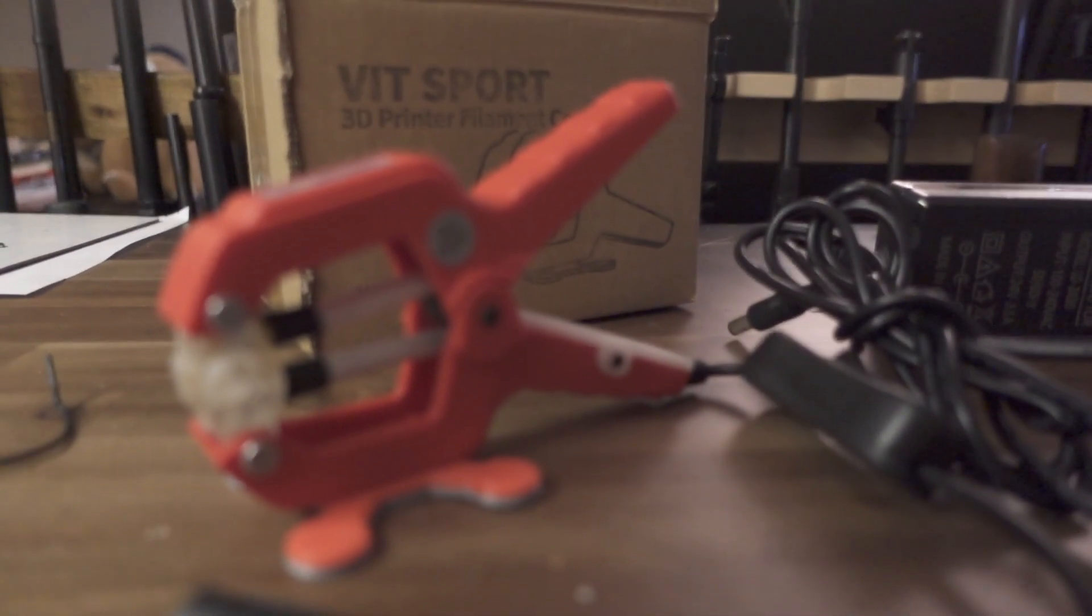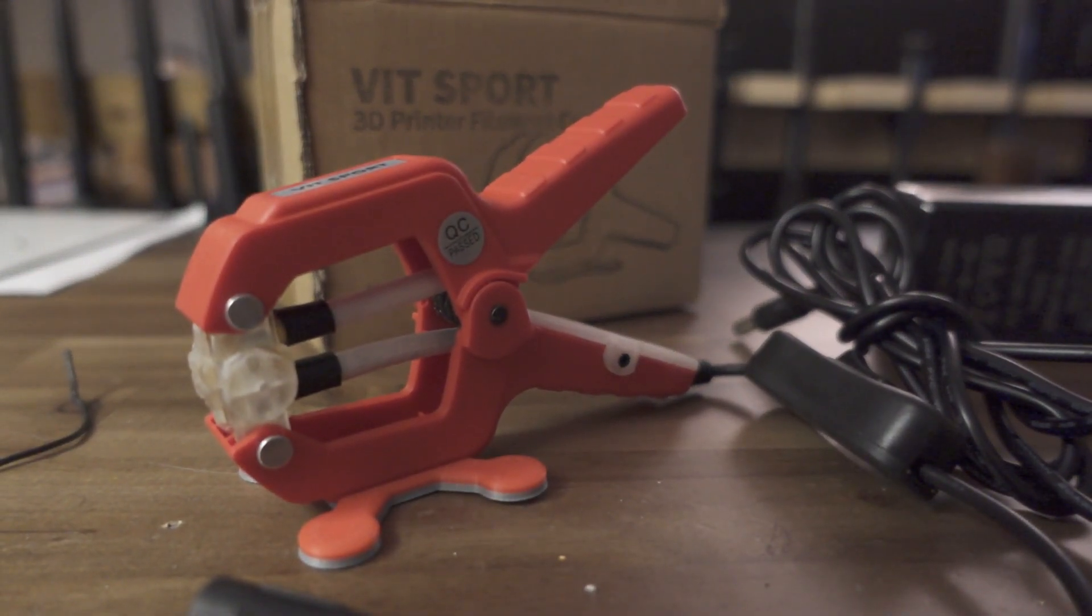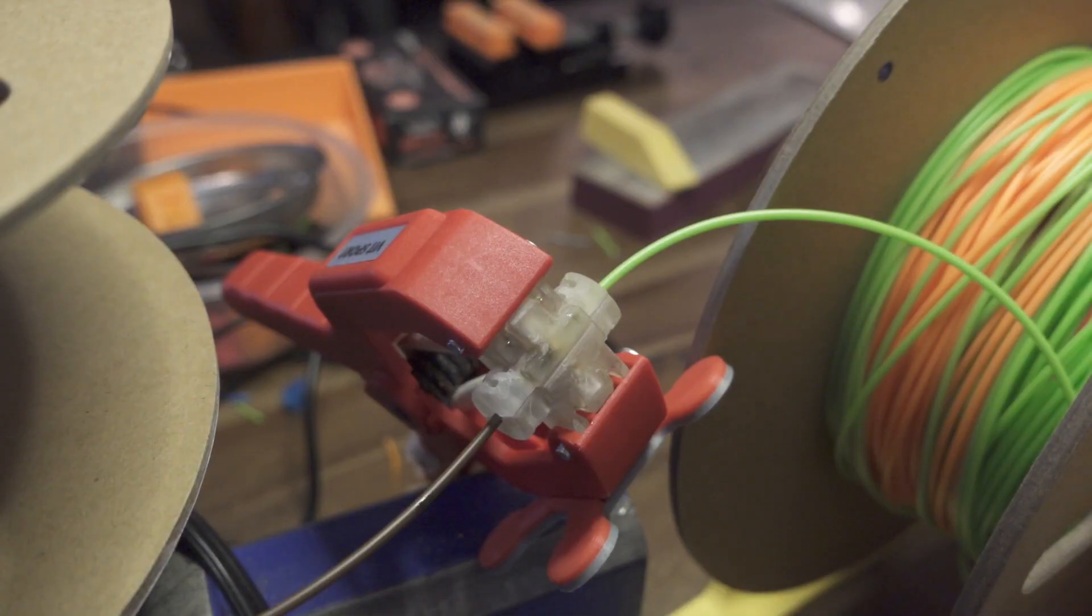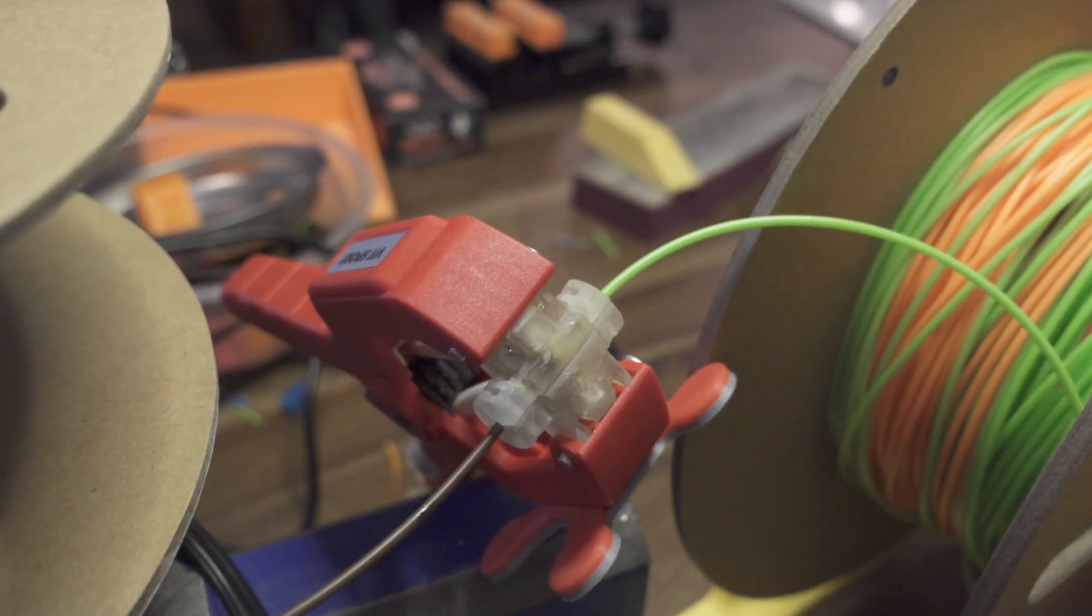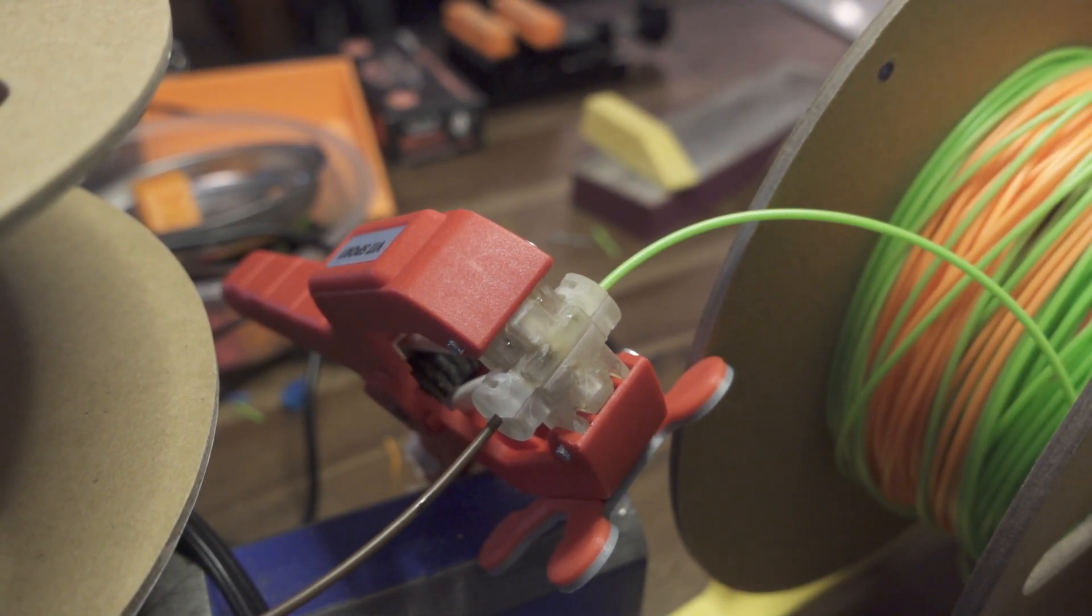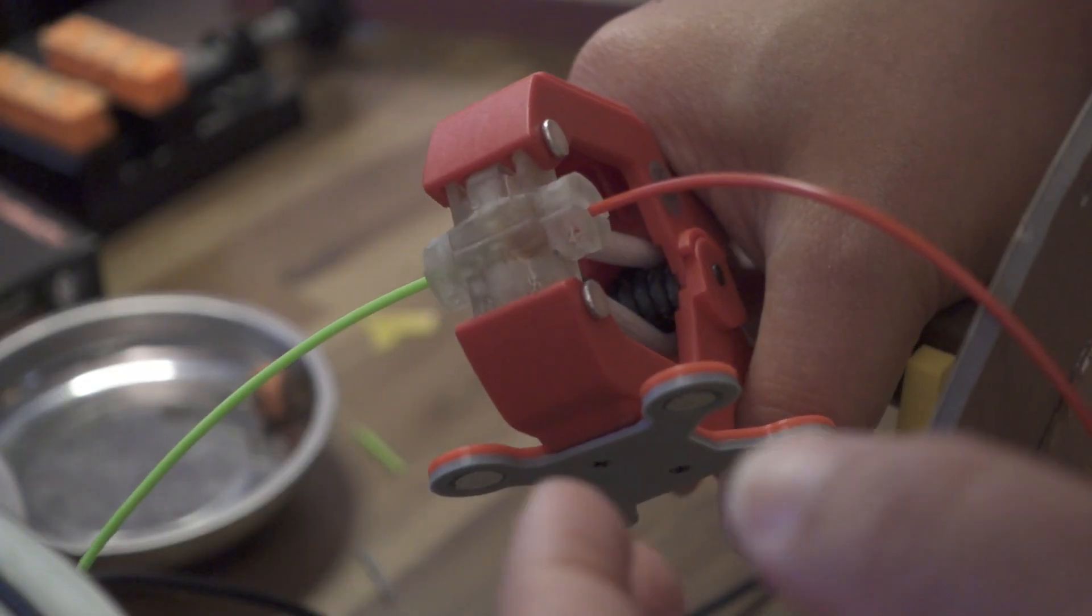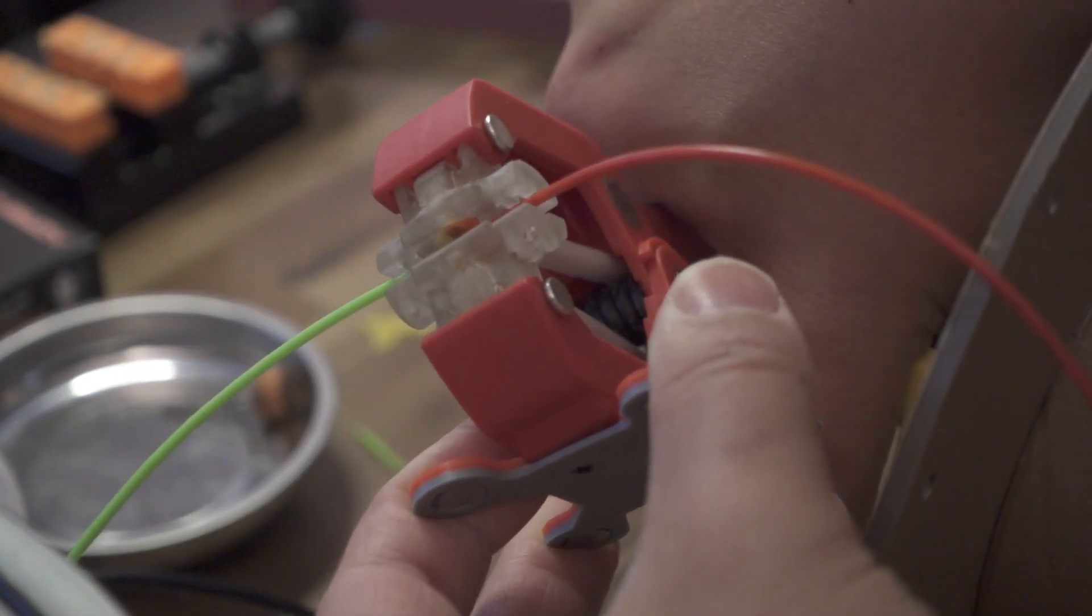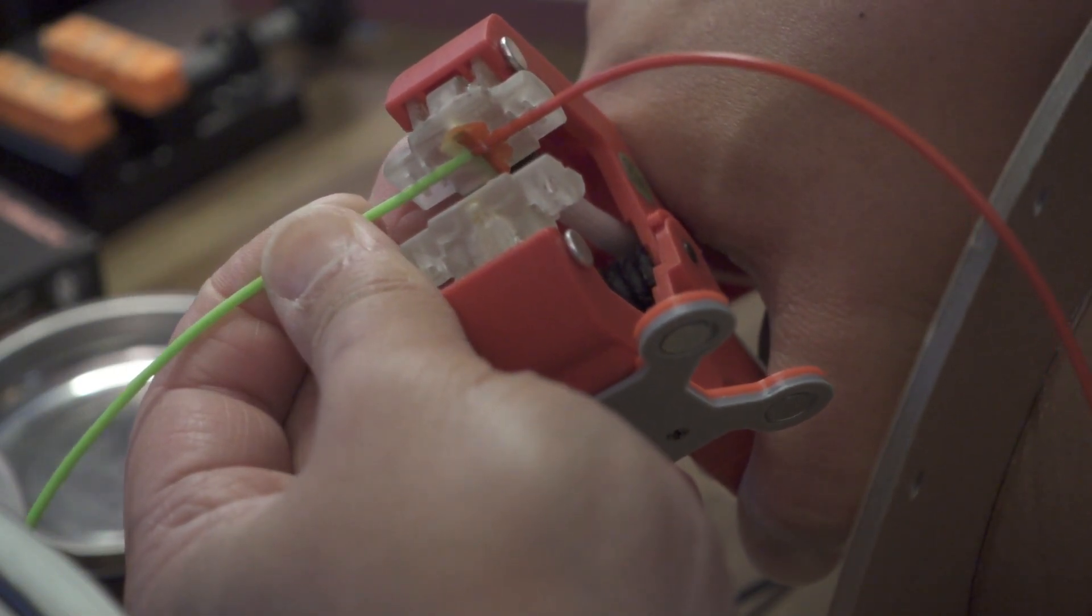This filament splicer tool is quite an oddity. It has a tubing of sorts, attached to what looks to be a repurposed clamp. It has a 3D printed base pad, I guess to stabilize it, screwed onto it from the bottom.